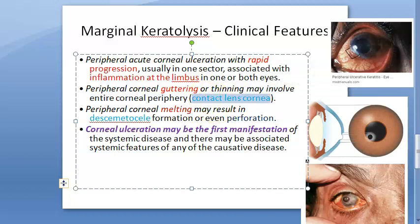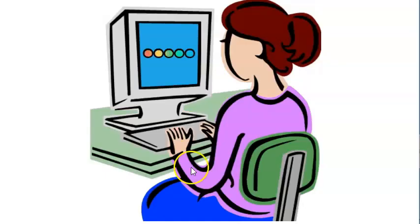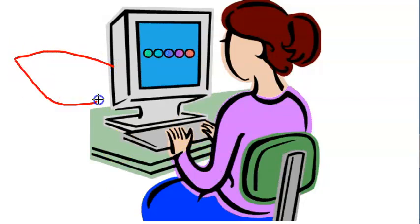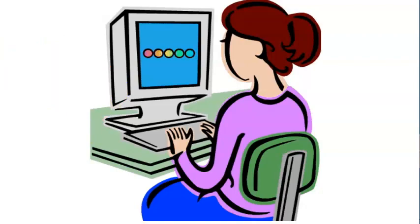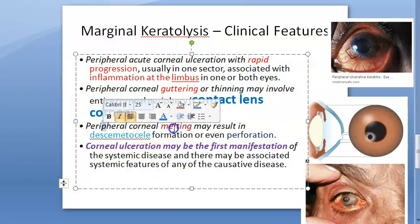When the entire periphery of the cornea is involved with guttering or thinning, this is called 'contact lens cornea.' The cornea itself becomes like a contact lens — something that could come off because it has thinned so much around the entire corneal periphery. This is the term used when thinning affects the full corneal periphery.